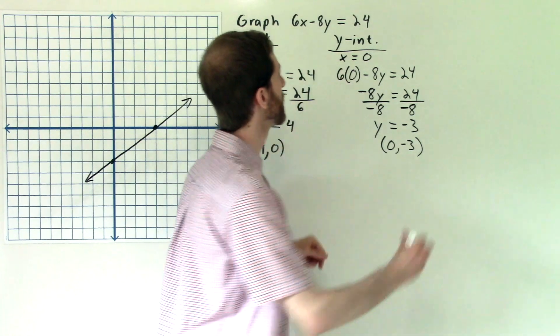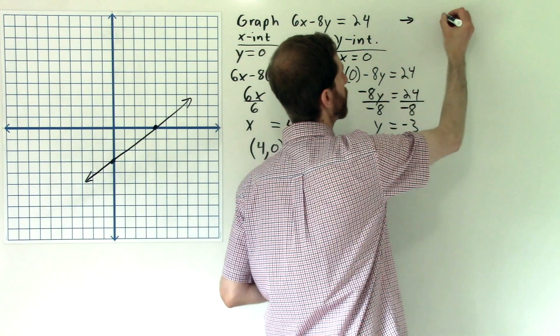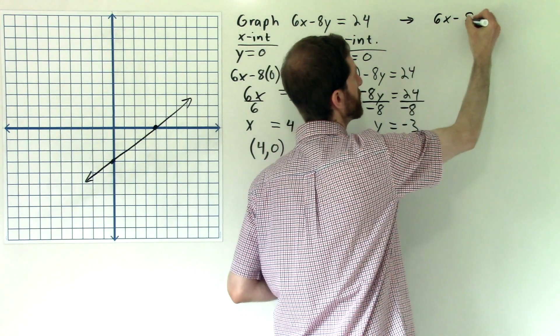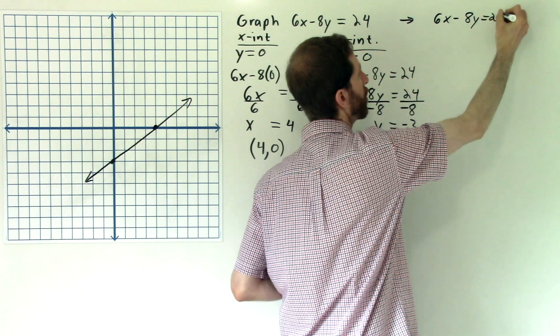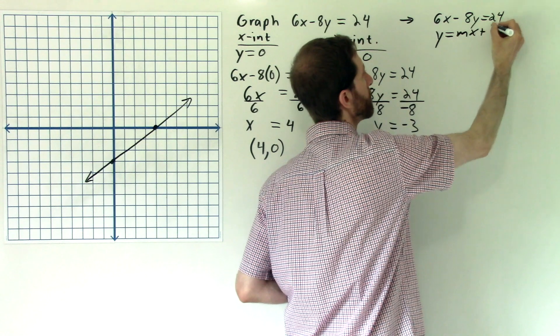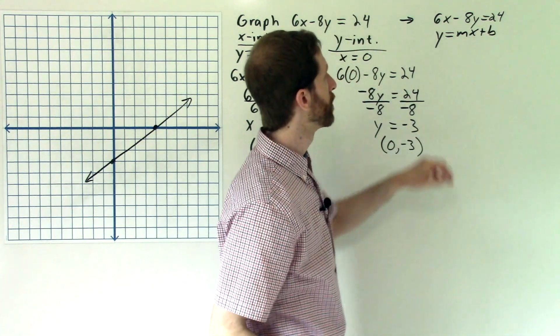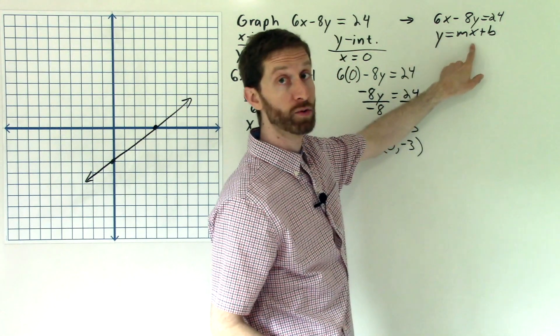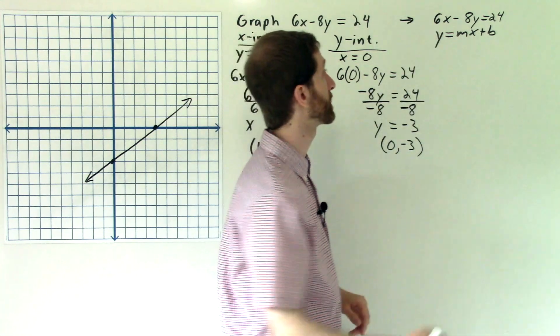So 6x minus 8y is equal to 24. I'll put that over here because we're going to do some manipulating. Our goal is to rewrite this as y equals mx plus b. So to do that, we're going to get the x value over to the right side. So I'm going to subtract 6x from both sides.